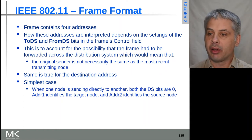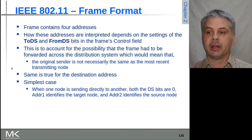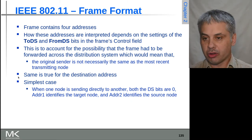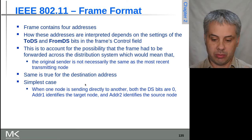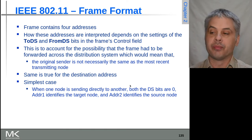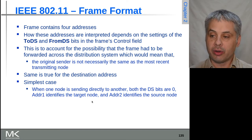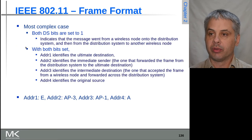This helps us track node movement in the network to some degree. For example, when a regular node sends directly to another without using any distribution system, both DS bits will be zero — 'to DS' and 'from DS' are both zero. Address one identifies the target node, similar to Ethernet where the destination address comes first to speed up switching and forwarding.